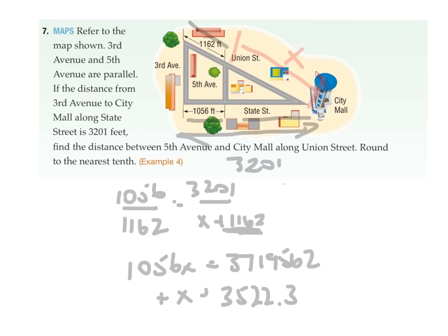Well, in theory, that's not x. That's x plus that 1162. Don't forget, that's that plus that 1162. Well, we want x on its own, so x is going to equal 3522.3 subtract the 1162. And you're finishing up with x is going to equal 2360.3 feet. Don't forget the units.